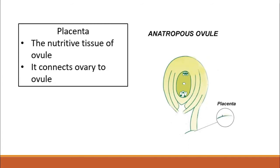The placenta is the nutritive tissue of the ovule. It provides nourishment to the developing ovule and connects the ovule to the ovary. It has two important functions: connecting the ovule to the ovary wall and providing nourishment to the ovule.